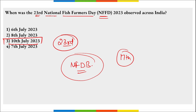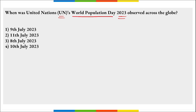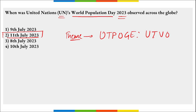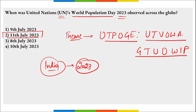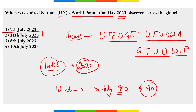When was UN World Population Day observed? On 11th of July, United Nations World Population Day is observed with the theme 'Unleashing the Power of Gender Equality: Uplifting the Voices of Women and Girls to Unlock Our World's Infinite Possibilities.' India became the world's most populated country in 2023. The first ever World Population Day was observed on 11th July 1990 and was celebrated in more than 90 countries.